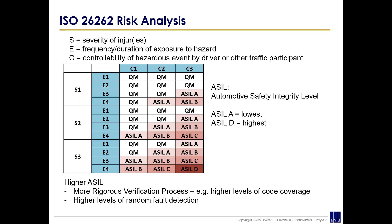First of all, we look at the severity of injuries — in other words, what's the impact of a failure, what damage can be caused? E is the frequency of exposure to hazard: how often does the fault occur and how long does it usually occur for? And C is controllability — how much control can we have over that hazardous event? For example, if the driver of the car can take back control, how quickly can they do that, and can we overcome the hazard by taking over control? From there, we have severity ratings S1, S2, S3 — where S3 is the highest severity — frequency ratings E1, E2, E4 — where E4 is the highest frequency — and controllability ratings C1, C2, C3 — where C3 is the lowest controllability, meaning we have very little control over that hazard.